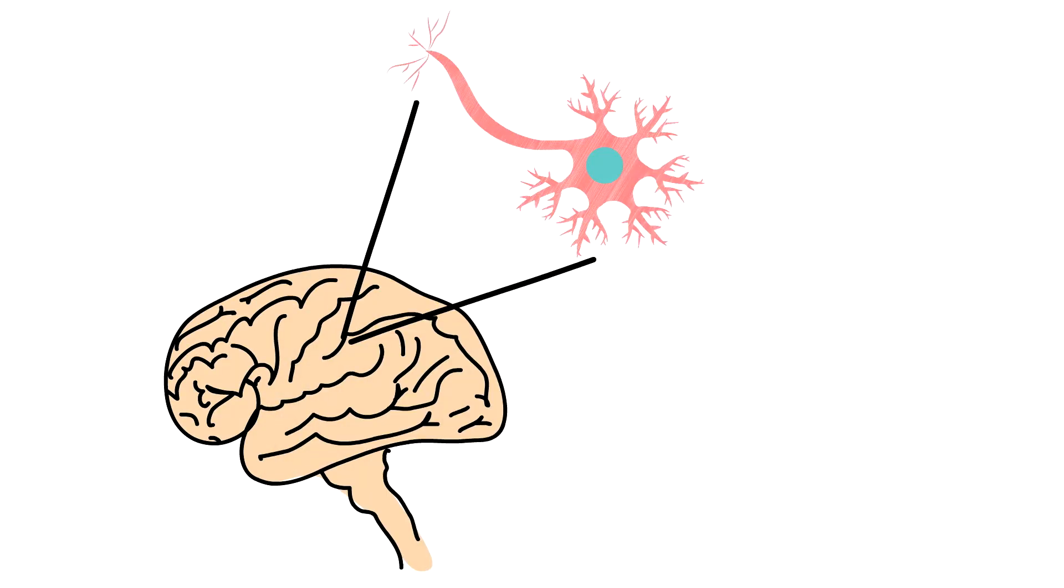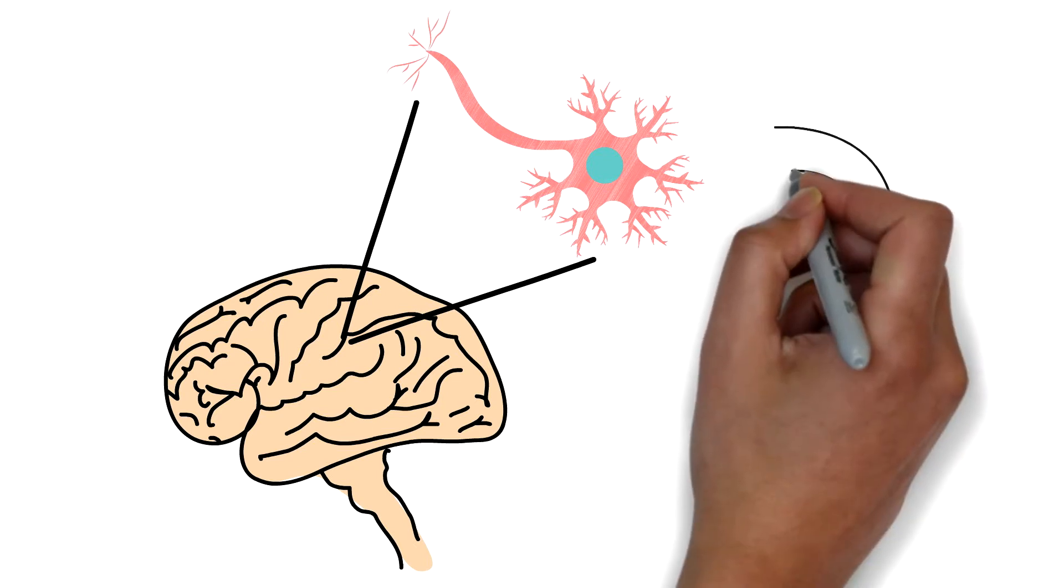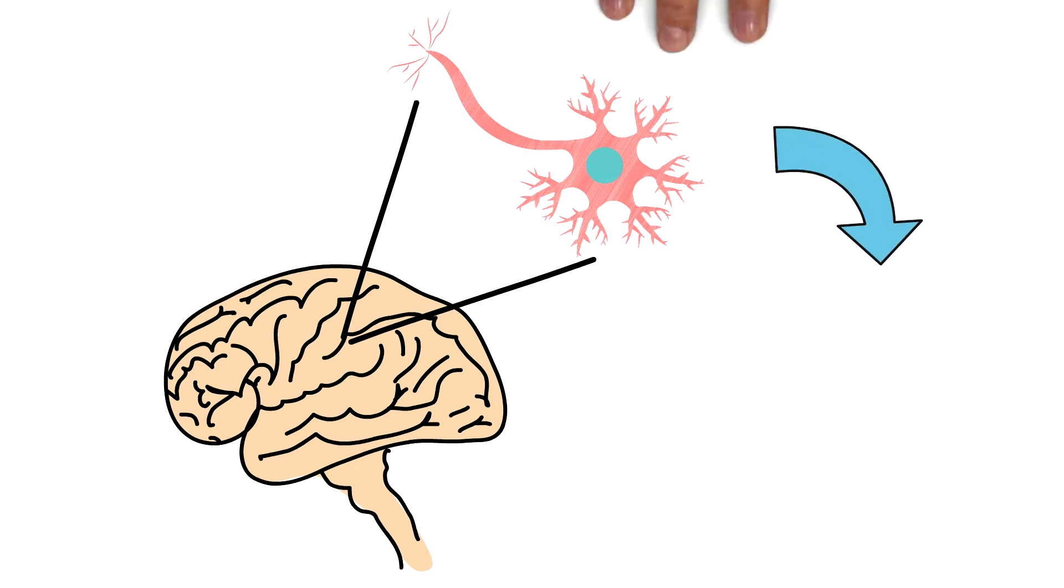TREM2 is produced by microglia in the brain and mainly regulates the survival and activation of microglia.